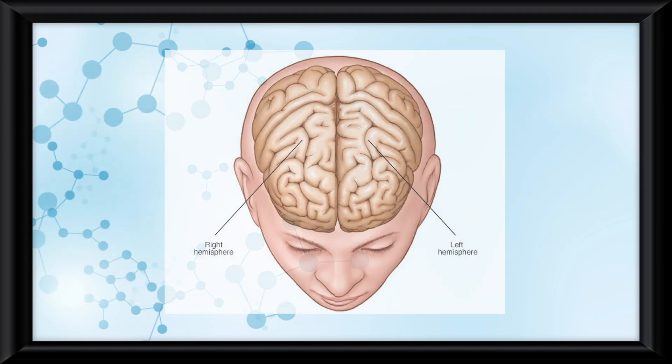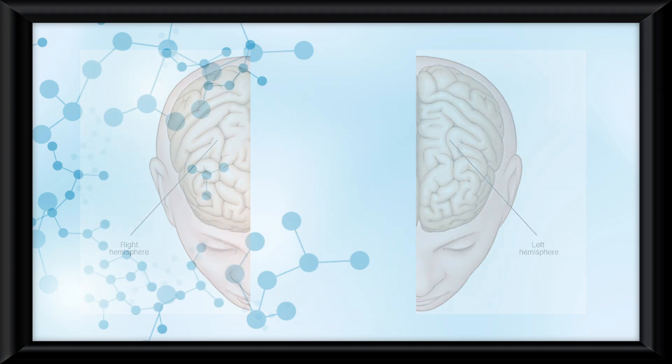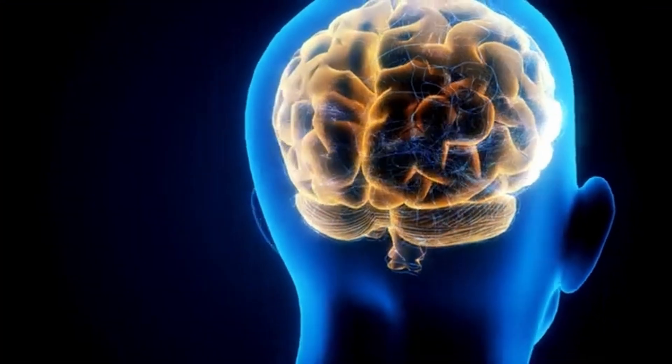Believe it or not, some people with extreme epilepsy have to get their corpus callosum separated. When research was done on these people, it revealed differences between the two hemispheres.